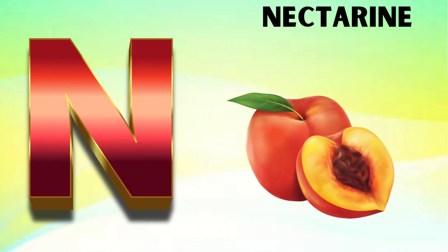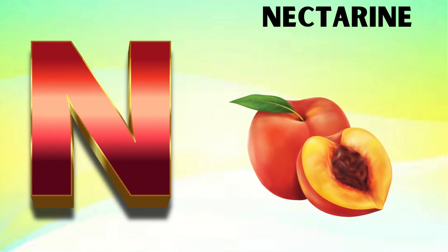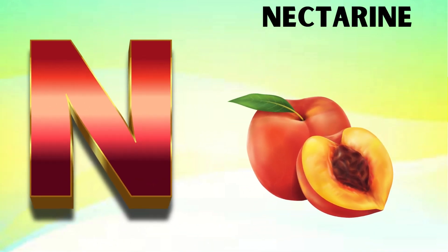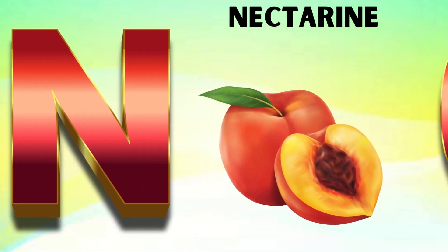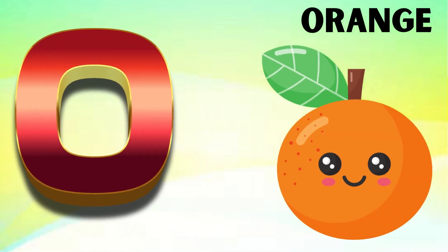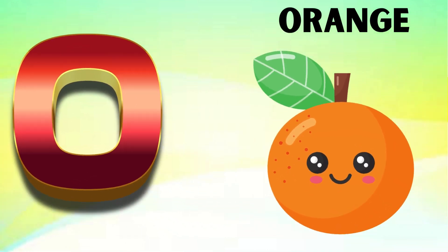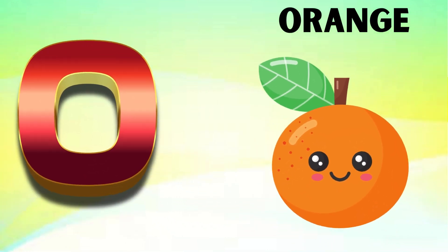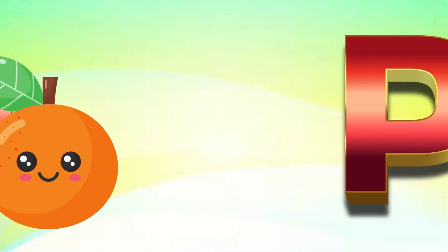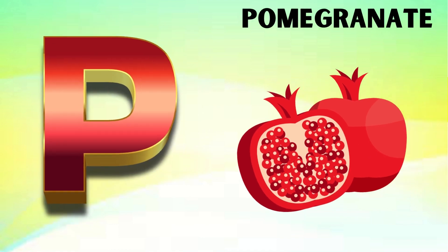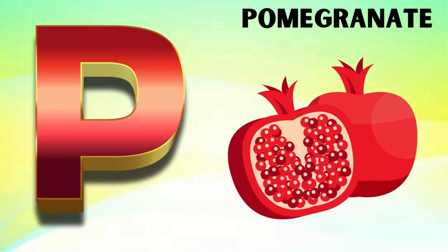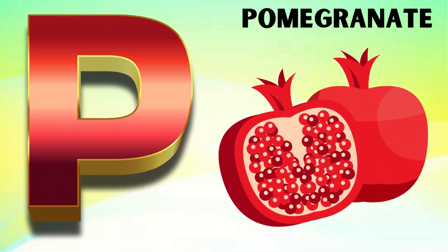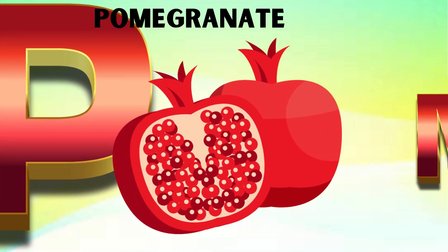N is for nectarine, n-n-n-nectarine. O is for orange, o-o-orange. P is for pomegranate, p-p-pomegranate.